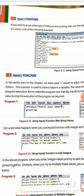In the above program, when we enter the integer values and try to add them, the values are not added, rather they join together. Similarly, when we try to multiply these values, we will get an error as shown in the program given below. See the program also.